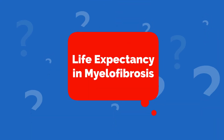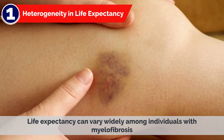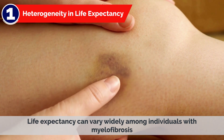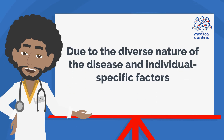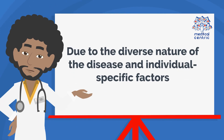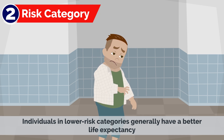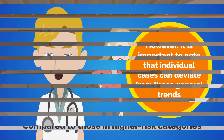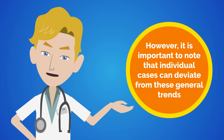Life Expectancy in Myelofibrosis. 1. Heterogeneity in Life Expectancy. Life expectancy can vary widely among individuals with myelofibrosis due to the diverse nature of the disease and individual-specific factors. 2. Risk Category. Individuals in lower risk categories generally have a better life expectancy compared to those in higher risk categories. However, it is important to note that individual cases can deviate from these general trends.